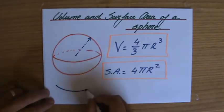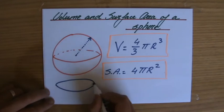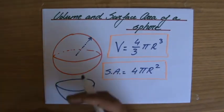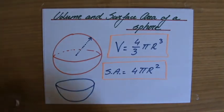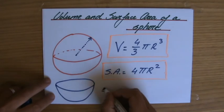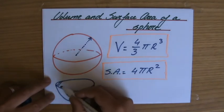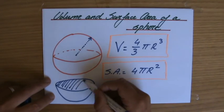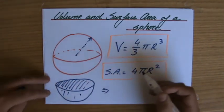So a hemisphere, if I sketch that, looks roughly like this. And of course, you can do all sorts of questions about a hemisphere. Because what is now the surface area, for instance? So if this is not hollow, it is a solid. What is the surface area of this hemisphere?